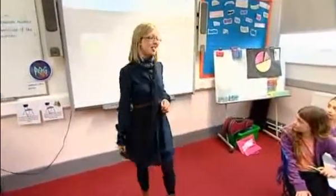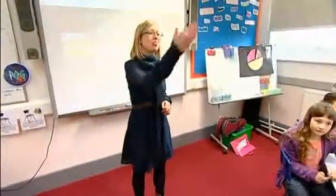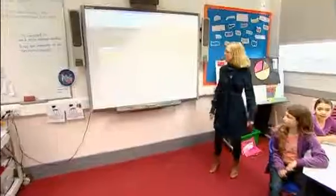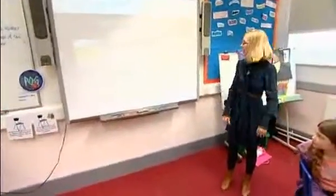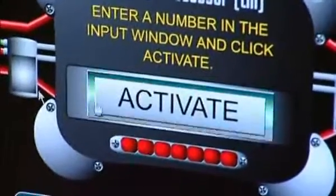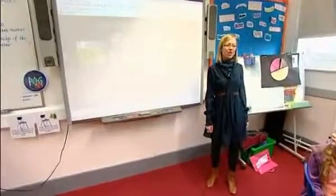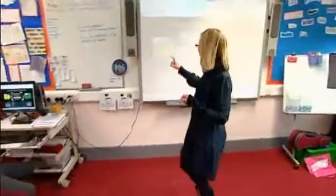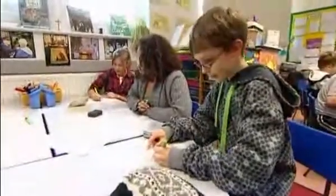We need an input number. Could we have a single digit input to begin with? Jerry? Five. We're going to activate our function machine and something is going to happen to our number. The output is 0.5. Could you write on your whiteboards what you think might have happened in our function machine?